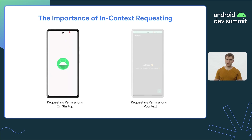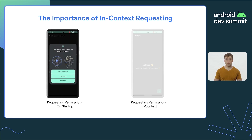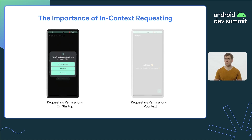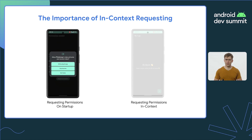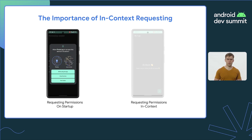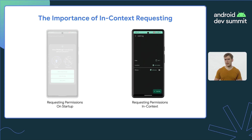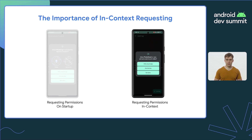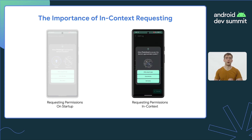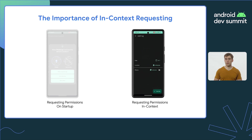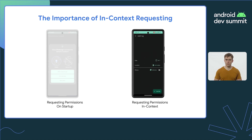Here we have an app which allows the user to create notes, with the option to take and attach a photo and a location to these notes. The first version of the app requests camera and location permissions at startup — a jarring experience for the user who may not understand why a note-taking app would need these permissions. In contrast, the second app requests permissions in context: it waits to request camera access until the user clicks the camera button, and waits to request location permission until the user clicks on the location button. This makes it much easier for users to understand what each permission will be used for.